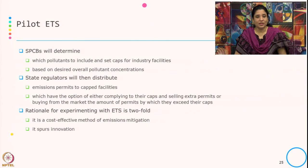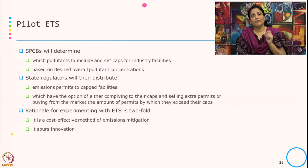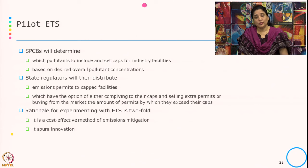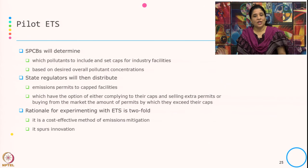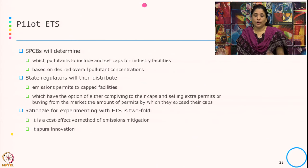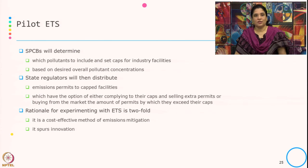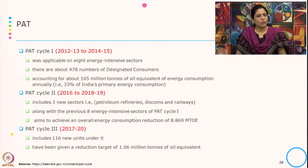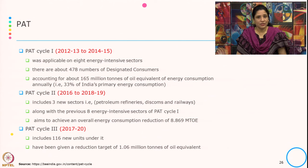State regulators distribute emission permits to capped facilities, which have the option of either complying with the caps, selling extra permits, or buying from the market the amount of permits by which they exceed their cap. There are two objectives: cost-effective emission mitigation and forcing innovation — determining whether making process changes or buying permits is more cost-effective. In Cycle 1, PAT was applicable to 8 energy-intensive sectors with about 478 Designated Consumers accounting for almost 33% of India's primary energy consumption.